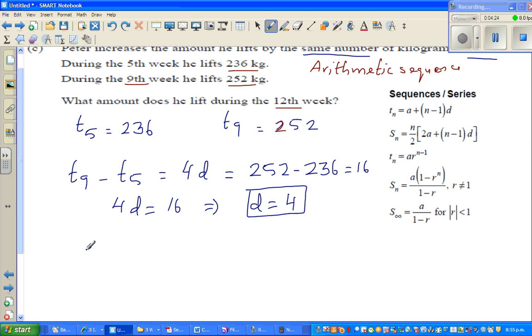So now, can I write t5 using this formula? t5 is a, which is a plus 5 minus 1, which is 4d. Now what is t5? I can say t5 is 236, is a plus, you already know 4d, 4d is 16.